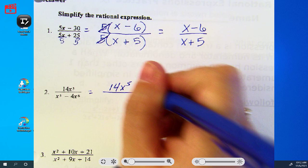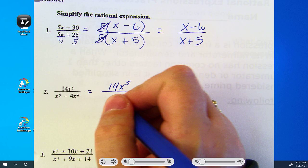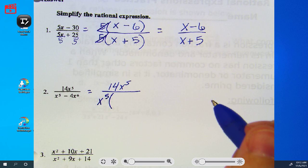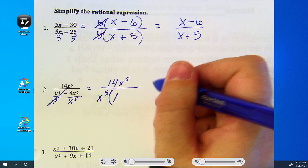In the denominator, is there a GCF? There it is. X to the 5th. We need to divide by x to the 5th. X to the 5th divided by x to the 5th is 1. Bring the 4 down.